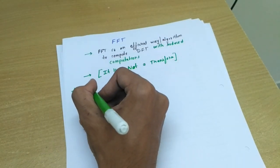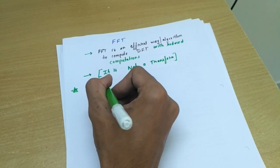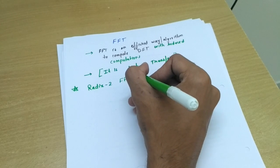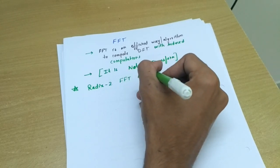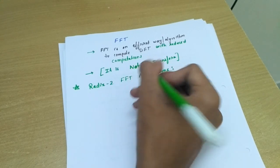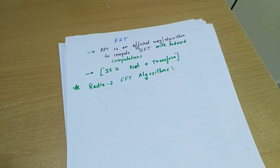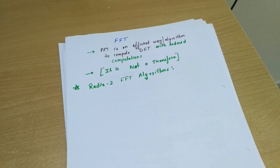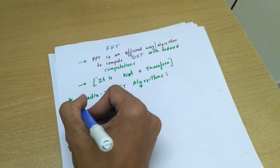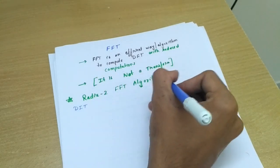Now Radix-2 FFT algorithms - what this radix signifies will be clear in a minute. So Radix-2 algorithms, now we will be dealing with the two algorithms which we will discuss in this series are DIT and another one is DIF.